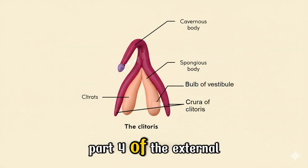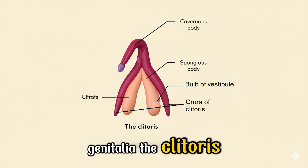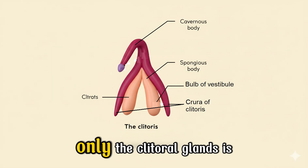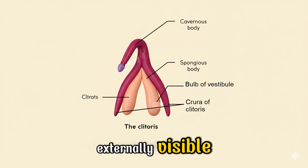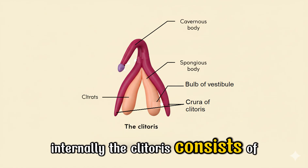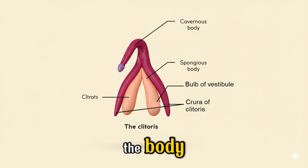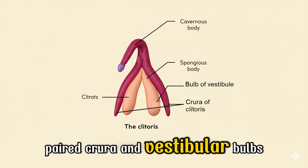Part 4 of the external genitalia: the clitoris. Only the clitoral glans is externally visible. Internally, the clitoris consists of the body, paired crura, and vestibular bulbs.